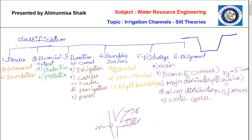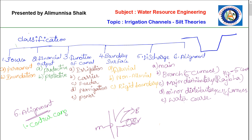The last classification is based on canal alignment, which is sub-classified into three categories: contour canal, watershed canal, and side slope canal. In canal alignment, a cross section of the canal is used to show these three categories of aligned canals.